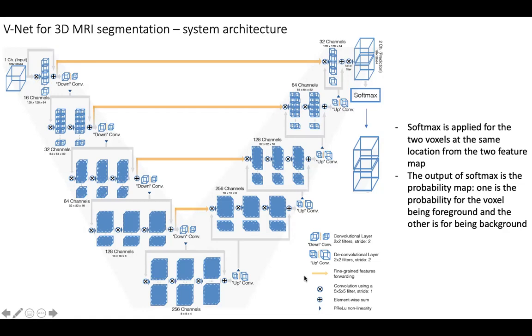The convolution kernel is of size 5 by 5 by 5 with stride 1, and we use 16 such 3D convolution kernels to do the convolution. Then we have a residual connection here, and then we do this downsampling convolution. We get the size reduced by 2.